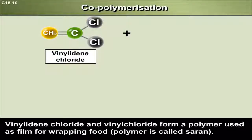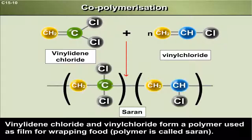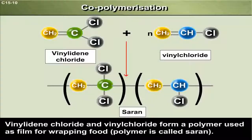Vinylidene chloride and vinyl chloride form a polymer used as a film for wrapping food. The polymer is called saran.